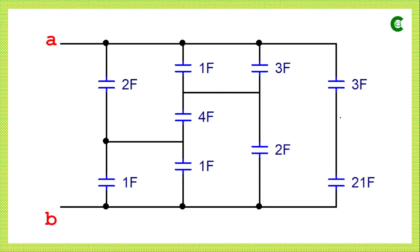Now we come to the circuit. At first glance we can see that 2F and 3F are connected in series, and at the same time 1F and 3F are connected in parallel, and also this 1F and 1F are also connected in parallel. For parallel capacitors, the equivalent capacitance is simply the summation of the two values, so the equivalent capacitor here will be 2F.